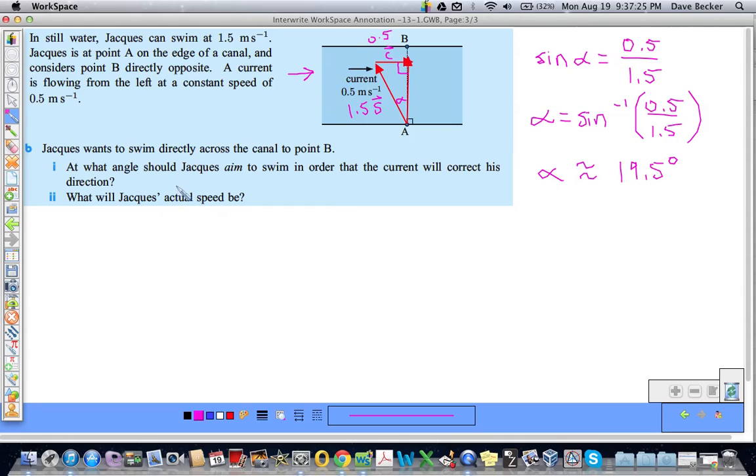So to answer this question, Jacques needs to aim about 19.5 degrees left of B. So he'll need his protractor, I guess, left of B.